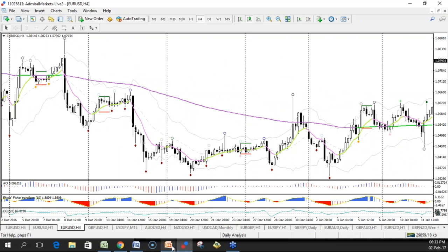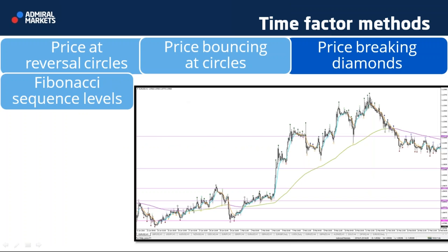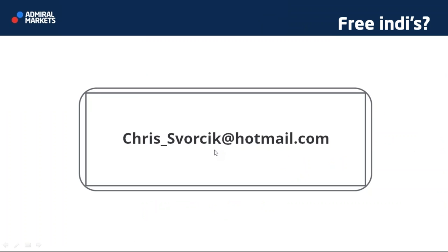If you're interested in the fractal indicator, you can write me an email and I'll send it to you for free. Just send an email specifying which indicator you're interested in — the Fibonacci sequence levels script, the fractal indicator, or the special moving average that changes color depending on direction. If you're watching the recording, just pause it to write that down. And with that I'm going to pass it over to Nenet.